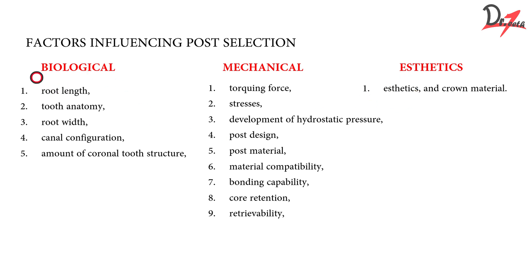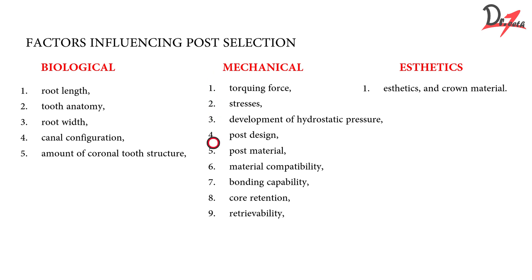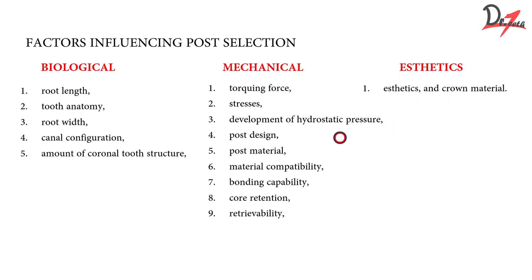In the biological category, we have root length, tooth anatomy, root width, canal configuration, and amount of coronal tooth structure. In mechanical, we have torquing force, stresses, development of hydrostatic pressure, post design, post material, material compatibility, bonding capability, co-retention, and retrievability. And in aesthetics, the aesthetics and the crown material will be discussed.